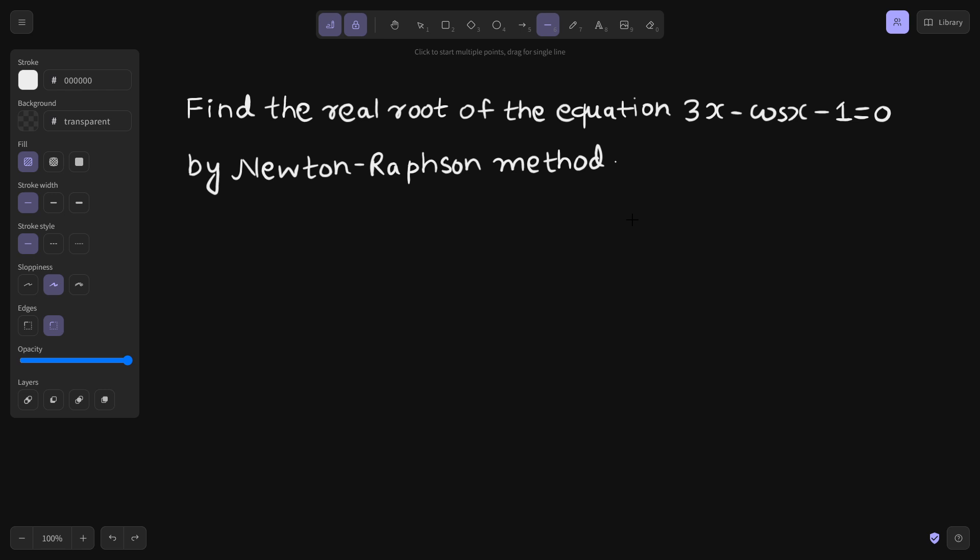Before solving this problem, set your calculator to radians because we will be using the values in radians in this problem. So it is advisable to set from degrees to radians. Let us write the function first. The function is 3x minus cos x minus 1. Let us find the interval in which the root lies.